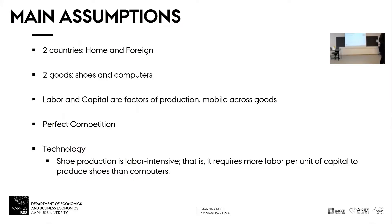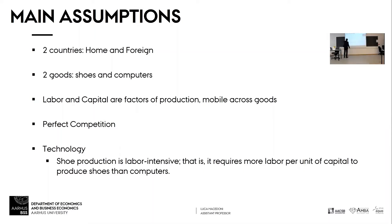We now consider two countries in the Ricardian model with two goods. In the Ricardian model we had wheat and cloth — this time we upgrade and think of computers and shoes. We then say there are two factors of production, both of which are mobile across sectors. So not only can labor move from shoe production to computer production, but the machines used to produce computers can also move and produce shoes. We say that shoe production is labor intensive because it requires more workers per unit of capital than computers.